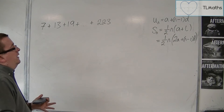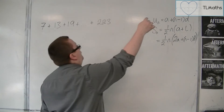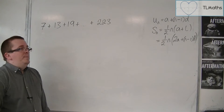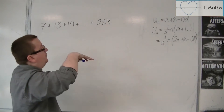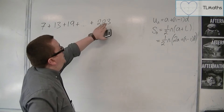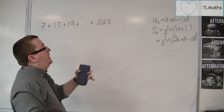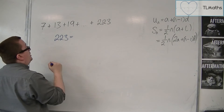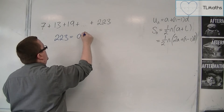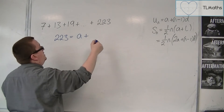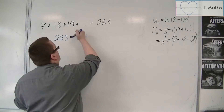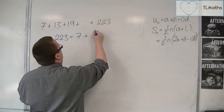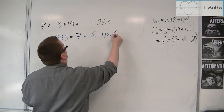And in order to do that, I must use the nth term formula, because I can identify the value of n using the last term. The last term, 223, is equal to the first term plus n minus 1 times d. So a is 7, plus n minus 1, times d, which is 6.